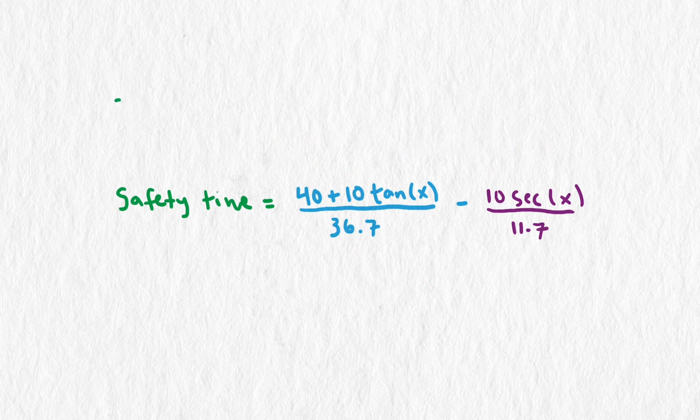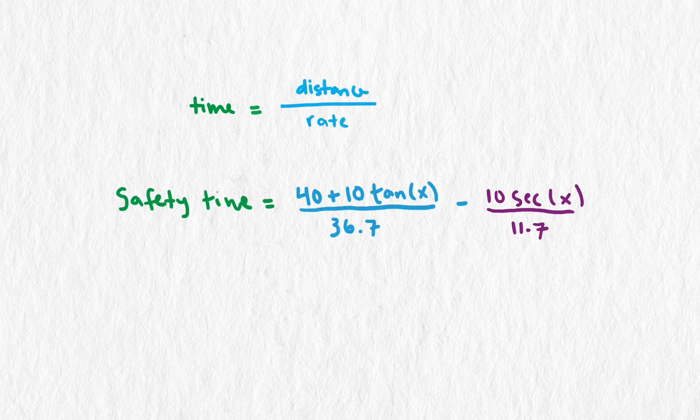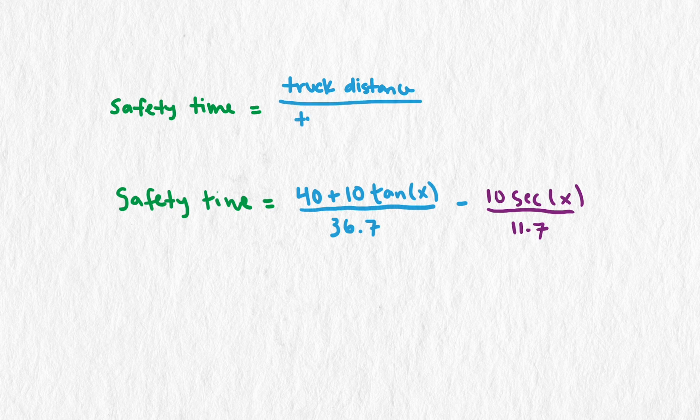The form of the function for calculating safety time comes from calculating the difference in the time it takes the pedestrian to get to the curb and the truck to get to the pedestrian. We calculate the time as distance divided by rate. So we have truck's travel distance divided by truck speed minus pedestrian's travel distance to the curb divided by the pedestrian speed.